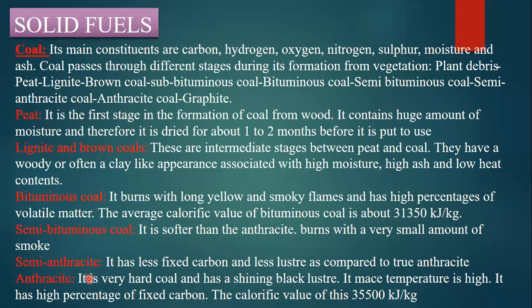As we move through the stages of coal classification, the percentage of carbon increases and moisture content decreases. Peat has high moisture and low calorific value; lignite is better than peat; bituminous coal is better than lignite; and anthracite is the purest and hardest. Anthracite and semi-bituminous coal are mostly used for steam generation.